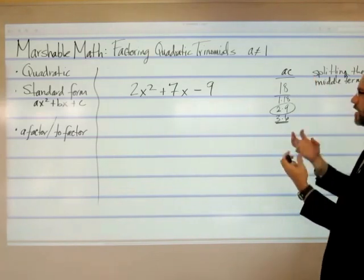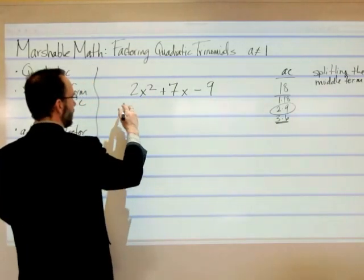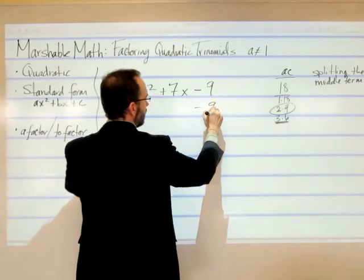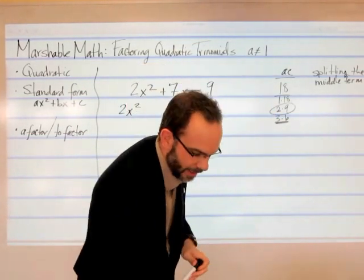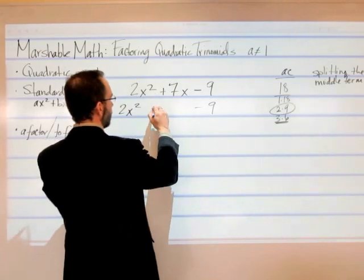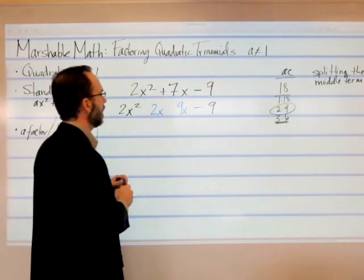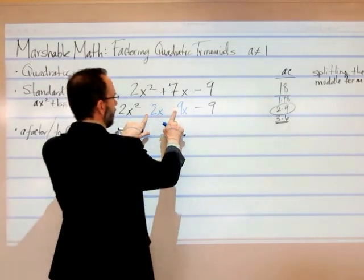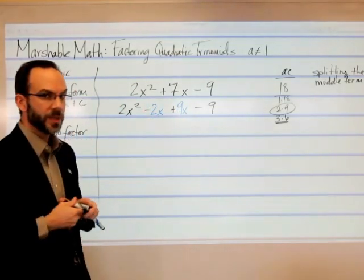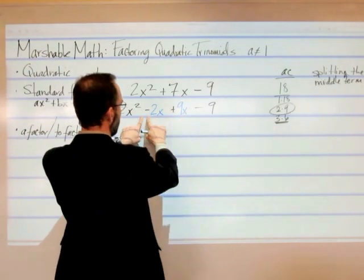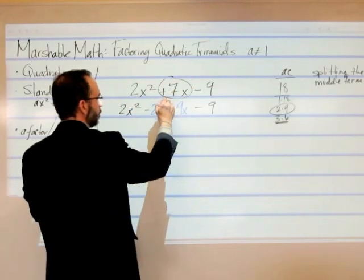It's called splitting the middle term because that's what I'm going to do next. I'm going to take the 7x and break it into two parts. I'm going to keep 2x squared as it is, and the negative 9 stays there as well. But I take this 7x and break it into a piece of 2 and a piece of 9 — so a 2x and a 9x. Now I need to think about signs. How do I get a positive 7 from a 2 and a 9? I have to have a positive 9 and a negative 2. So negative 2x plus 9x gives me a positive 7x.